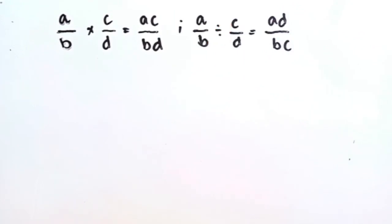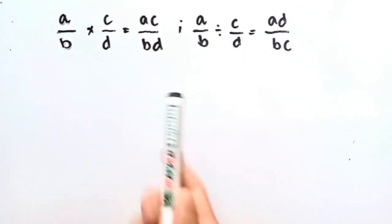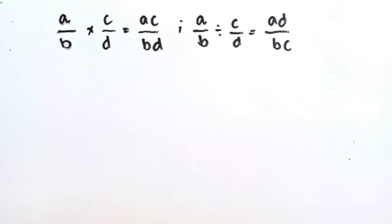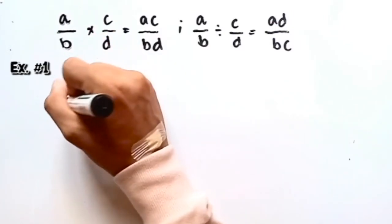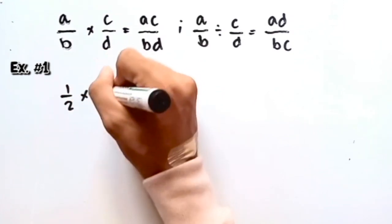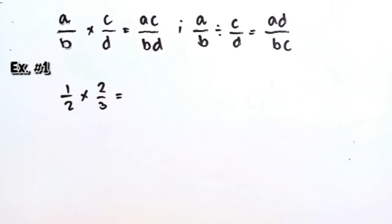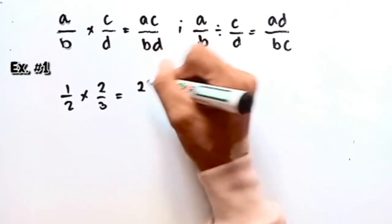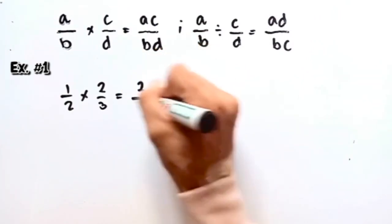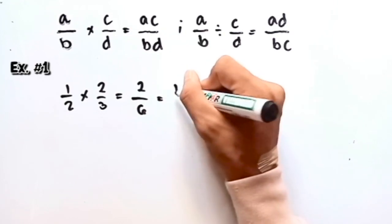Now let's try some problems and apply this formula. For multiplying fractions, let's multiply 1 half times 2 thirds. So this is equal to 1 times 2 is 2, then 2 times 3 is 6. So this is equal to 1 third.